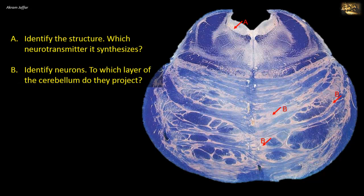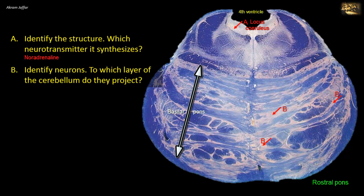Identify the structure and which neurotransmitter it synthesizes. This is a section of the rostral part of the pons. Beneath the lateral side of the rostral part of the fourth ventricle, note the mesencephalic tract of the trigeminal nerve. Adjacent to it is a small collection of distinctively deeply pigmented cells that constitute the locus ceruleus — these are noradrenergic neurons, often classified as a component of the reticular formation. Neurons B are located in the basal part of the pons, between longitudinally and transversely oriented fibers; these are the pontine nuclei, which receive ipsilateral corticopontine projections.